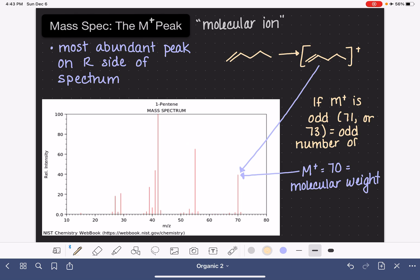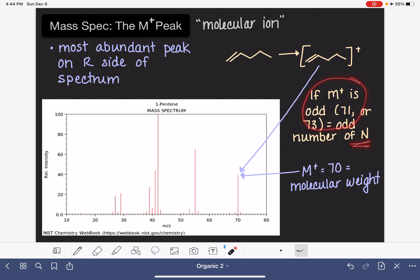So if we have an odd number M plus peak, this tells us that we also have an odd number of nitrogen atoms in our molecule. Typically just one. It's not very common to have more than one nitrogen in just regular organic molecules, though that would be different in biochemistry. But typically, if we have an odd M plus peak, that means we have a single nitrogen atom in our molecule.